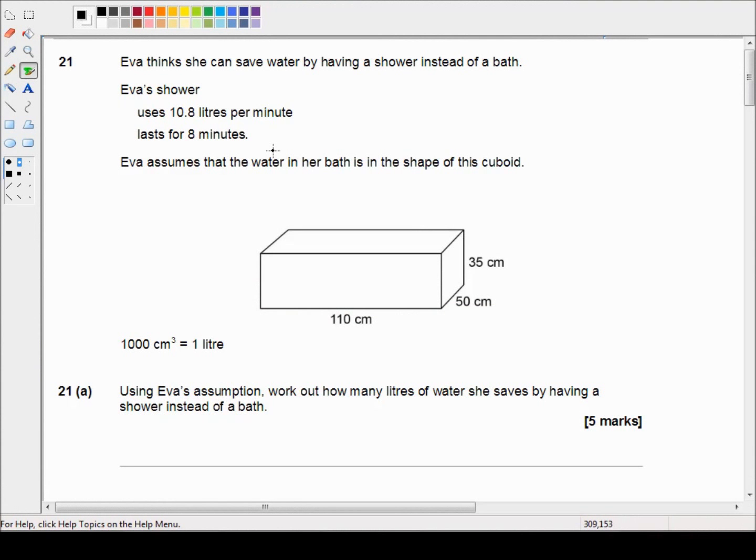Hello and welcome to another AQA GCSE revision video. This is the June 2017 past paper, and we're looking at the second paper in the foundation tier. This is question 21. It says Eva thinks she can save water by having a shower instead of a bath.